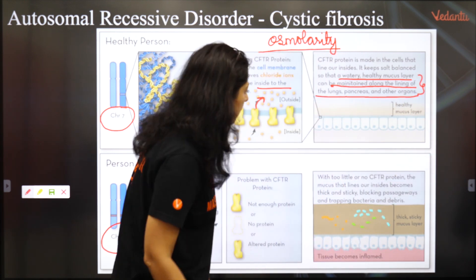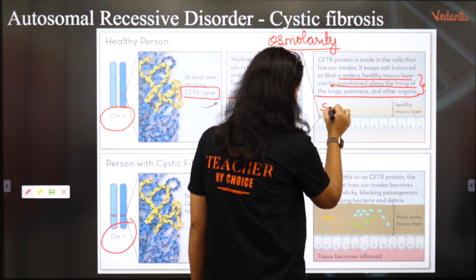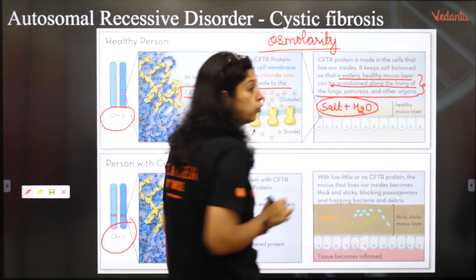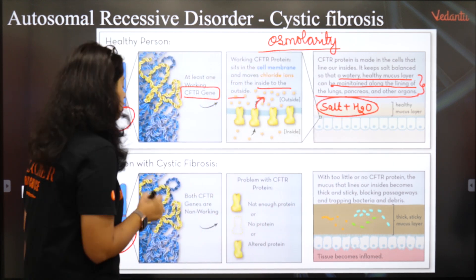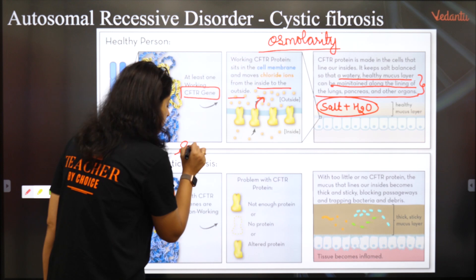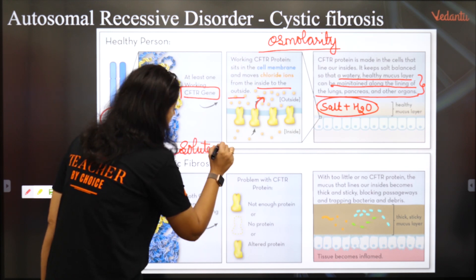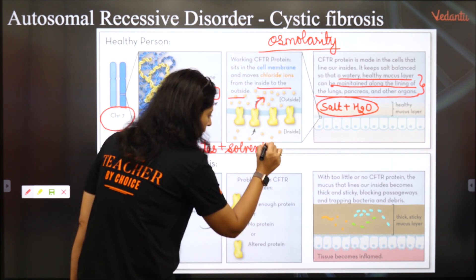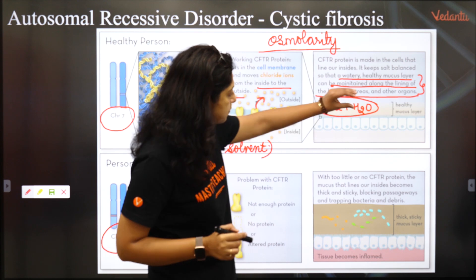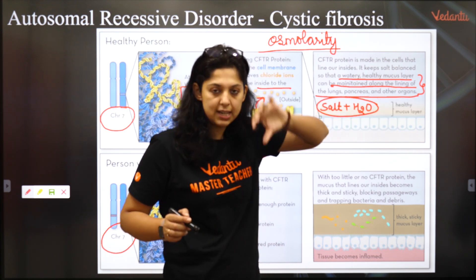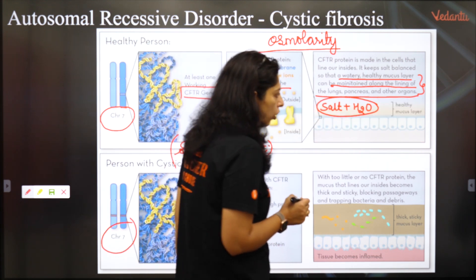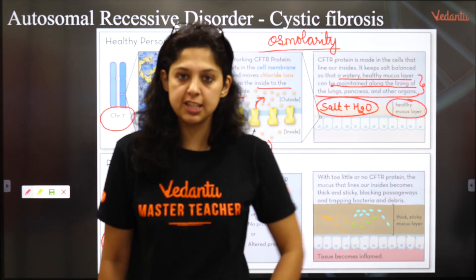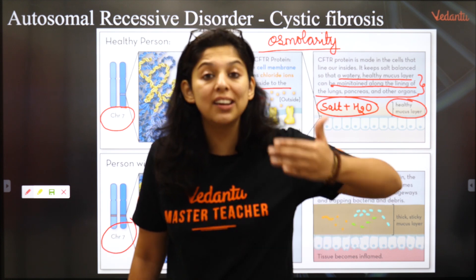This is very important — especially at the AIIMS level. Solutes attract the solvent. So if the ions are kept on the outside, they are going to attract water, giving you a healthy watery mucus layer on the outside, which is why the organs don't dry up.